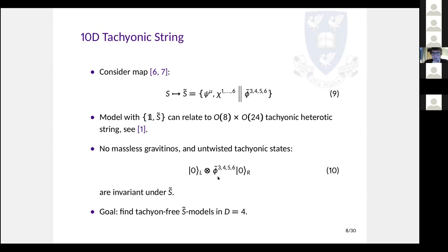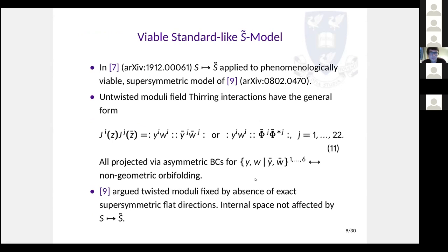In this model, tachyons come from untwisted states where the complex fermions added to S-tilde can be right-moving oscillators. These will always be present regardless of GSO projections. However, a tachyon only indicates an instability in the Minkowski 10-dimensional background. If we look in lower dimensions — in particular in four dimensions — and find tachyon-free configurations, then it seems reasonable to suggest that these 10-dimensional tachyonic strings can be viable starting points for phenomenology. In a paper from last year, we looked at a model from 2008 which was supersymmetric, applied the S-to-S-tilde map, and found that we preserved the key features of the phenomenology: three generations, the Higgs content, and most importantly, tachyon-freedom.